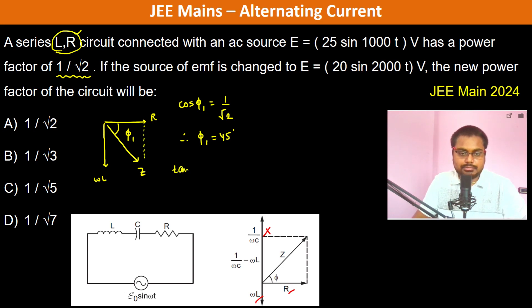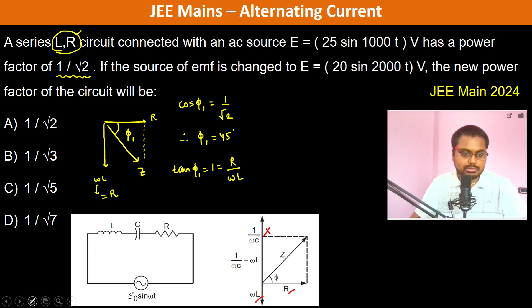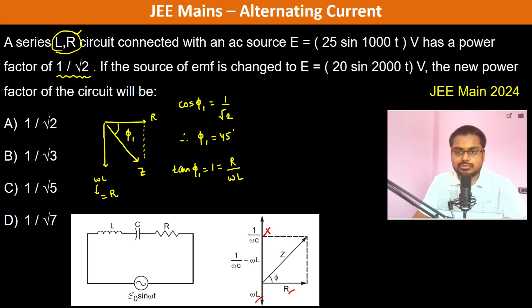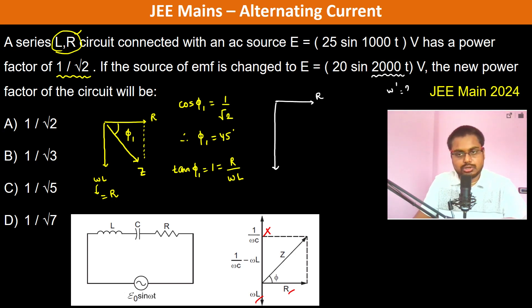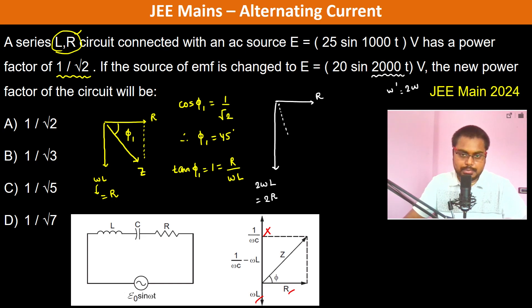Since φ₁ = 45°, tan φ₁ = 1, which gives us ωL/R = 1, so numerically ωL = R. Now if the source EMF is changed such that ω becomes ω' = 2ω, then the inductive reactance becomes 2ωL, which is equal to 2R.